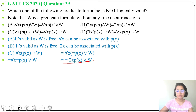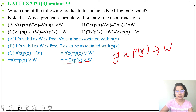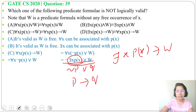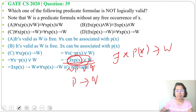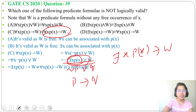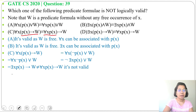This is equivalent to: there exists X P(X) implies W. Because negation of (negation of P) or Q can be written as P implies Q. So this whole thing becomes: there exists X P(X) implies W, which is not equivalent to the RHS. The RHS has a universal quantifier, but we got an existential quantifier. So we cannot add only the universal quantifier with P(X). Option C is not logically valid.